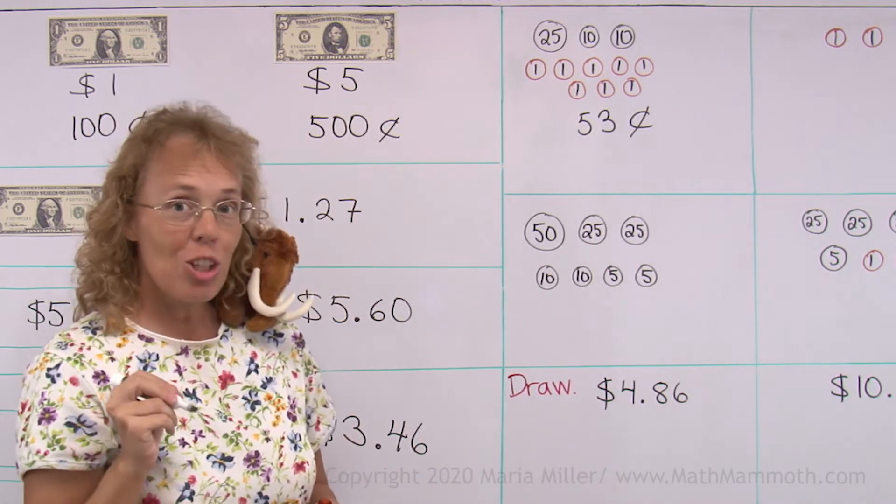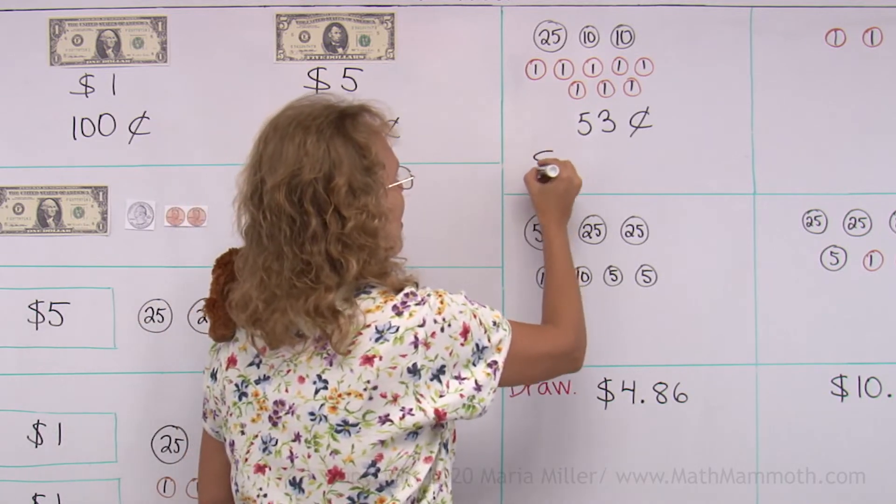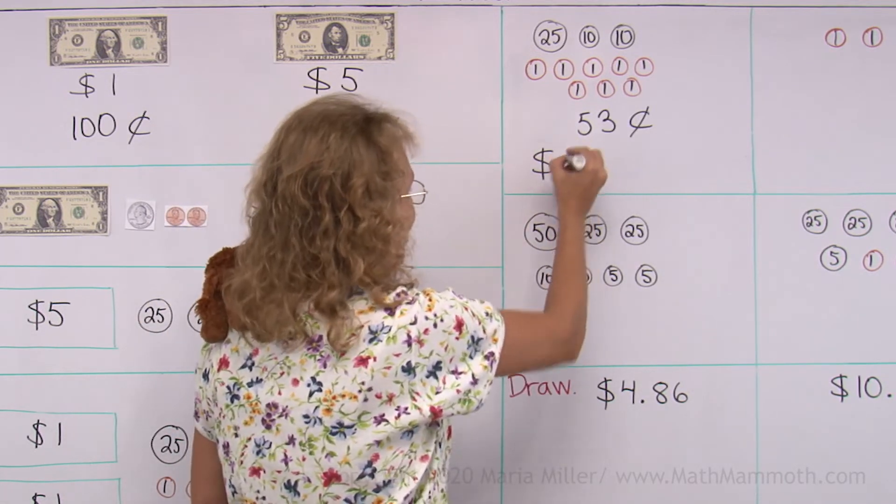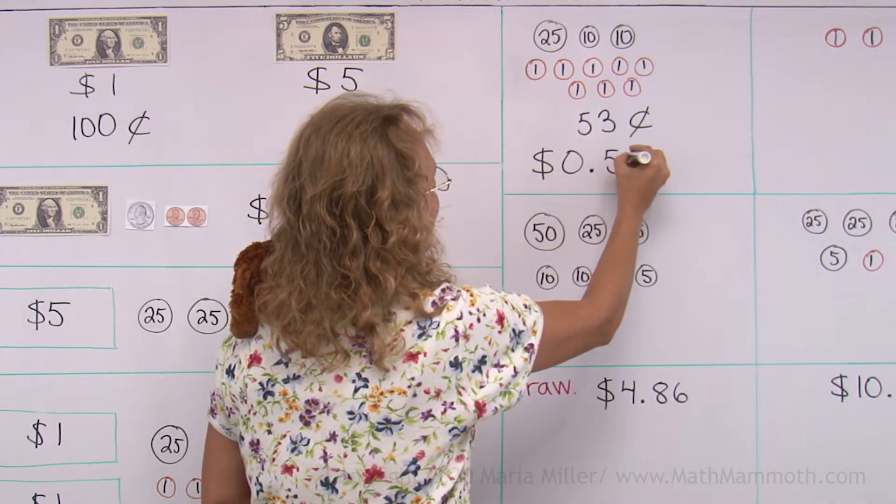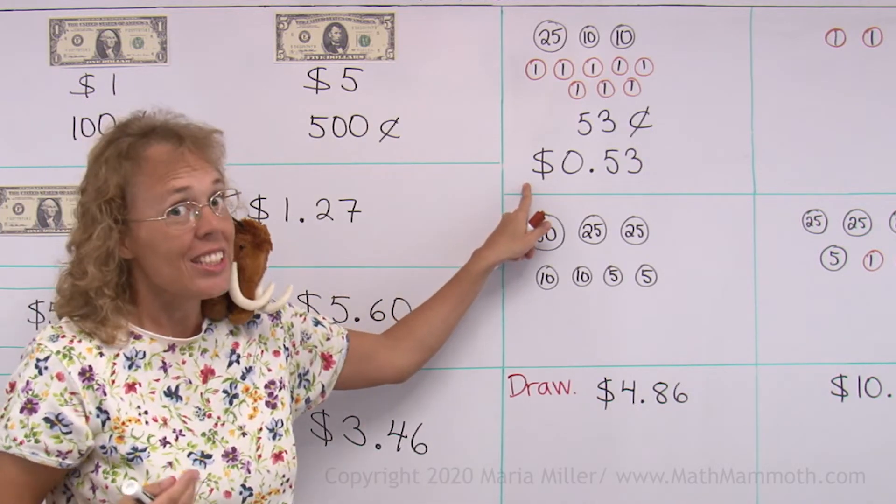So I can write it as fifty-three and then the cent symbol, fifty-three cents. But I can also use the dollar symbol like this, dollar symbol and then I have zero dollars. So I write zero for the dollars and then the point and then the cents, fifty-three. So this also means fifty-three cents.